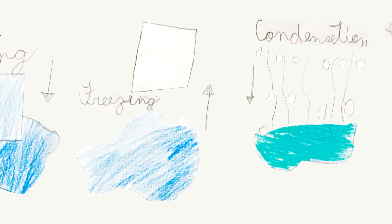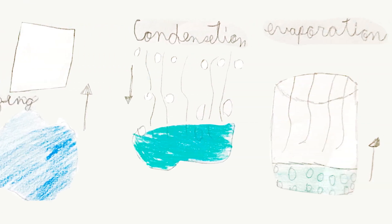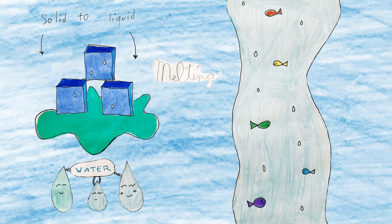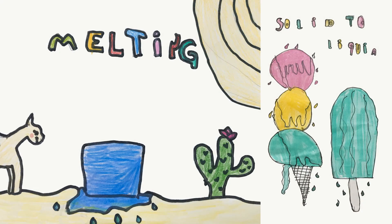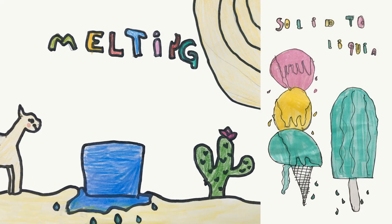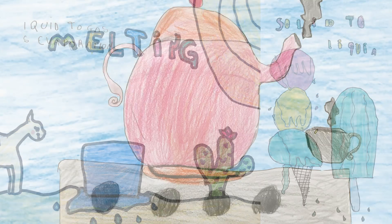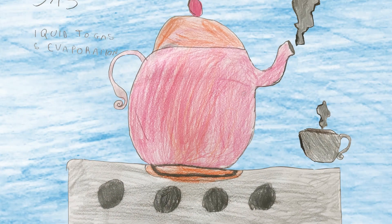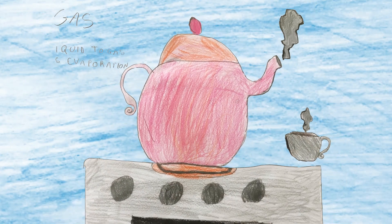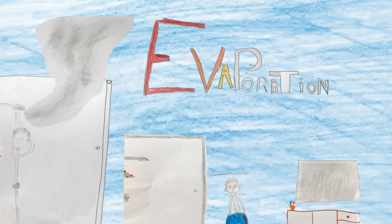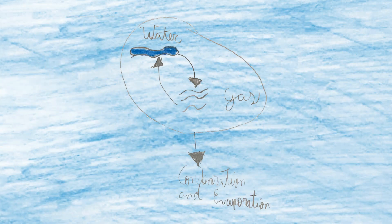Matter can change state. The change from solid to liquid is called melting. In order to have this change, we need to add heat. For example, ice to water. The change from liquid to gas is called evaporation. In order to have this change, we need to add heat. For example, water to steam.